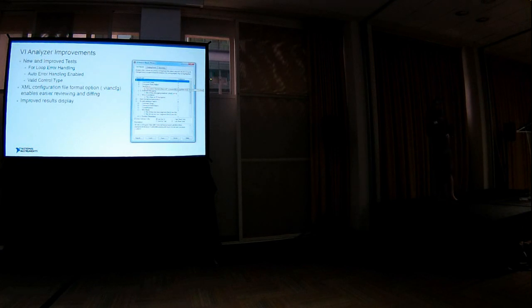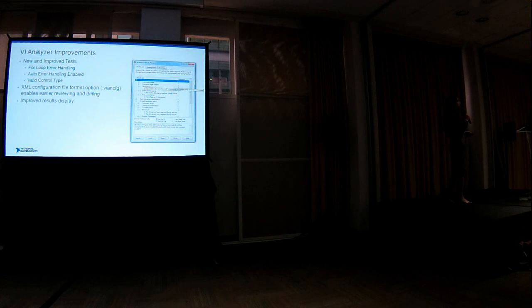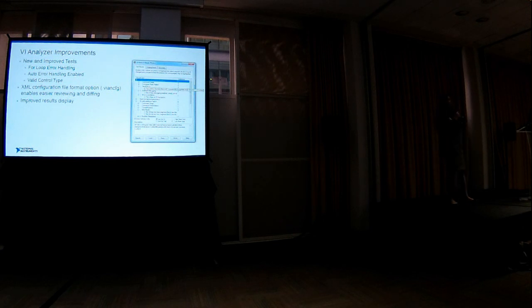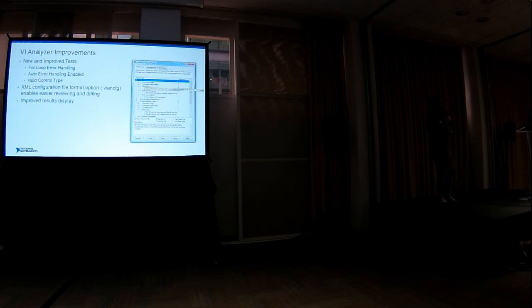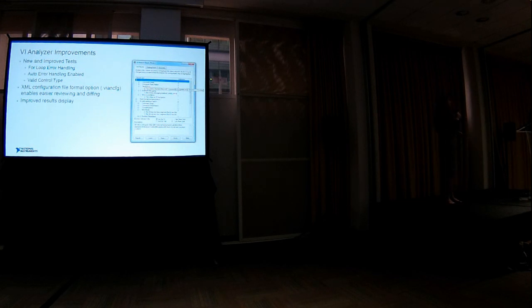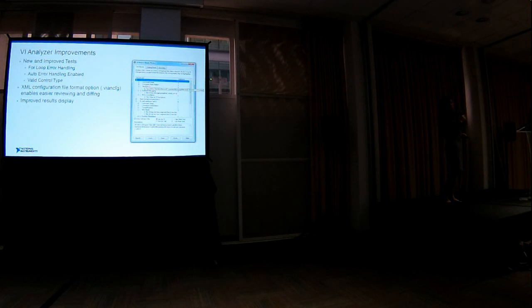Another key feature coming in 2018 is improvements to VI Analyzer. Via the VI Analyzer Enthusiast Community as well as internal system engineering teams, we've fed in a lot more features. I'll call out a couple of tests. One is valid control type — if you don't want to use just a custom control but want to amend it to use type definitions, you can set up a test for that. Also, if you are against auto-error handling, you can set up a test to fail if auto-error handling has been enabled. The configuration file is now XML-based, which should save time understanding what changes have been made to those tests.